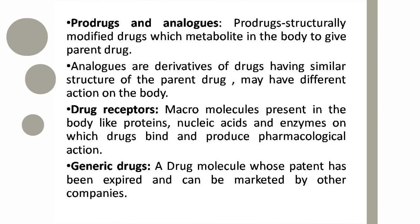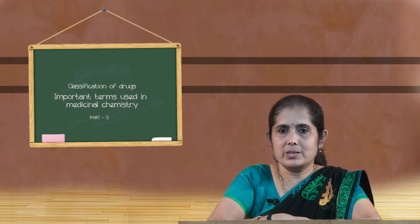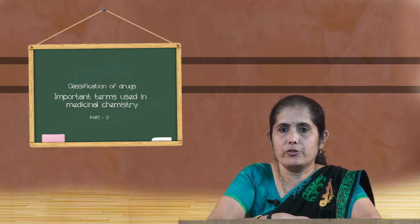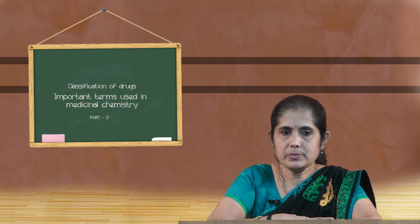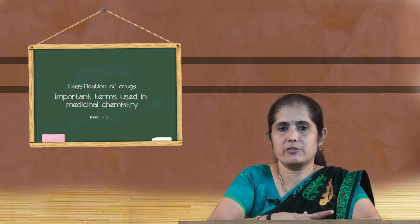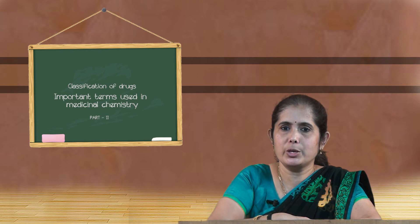Next, let us move on to drug receptors. When we take a drug or medicine into the body, where does it go? Somebody has to receive that drug in our body — just like when a guest enters your house, somebody has to receive them. Drug molecules are like guests entering our body, and drug receptors receive them. Drug receptors are macromolecules present in the body — like proteins, enzymes, and nucleic acids — on which the drug binds and produces the pharmacological action. When the drug sits on the drug receptor, the receptor adopts conformational changes to adjust to the drug molecule, just as we adjust ourselves to a newcomer in our house.